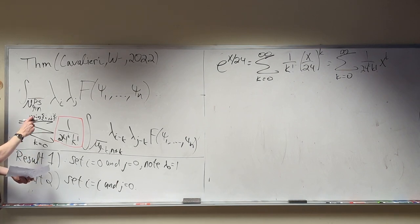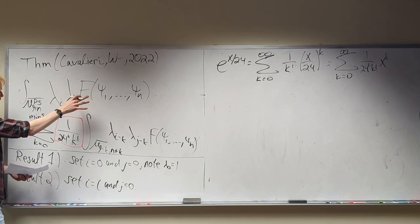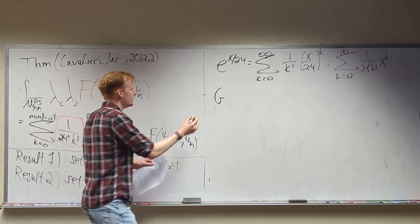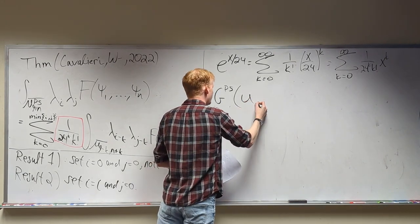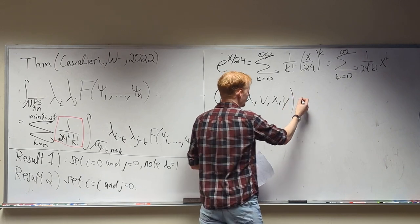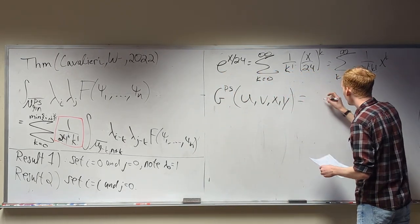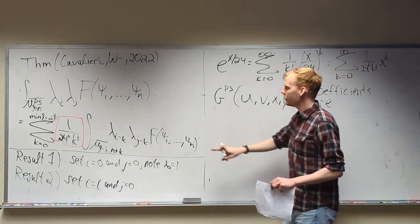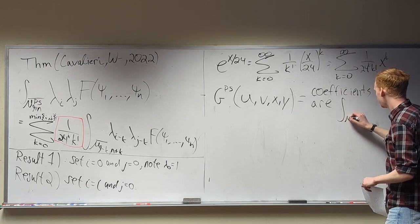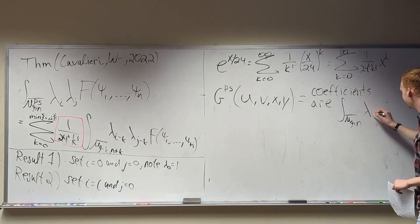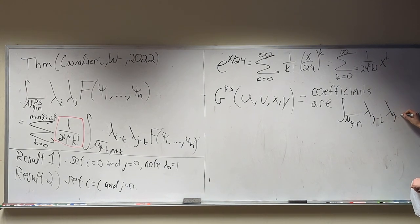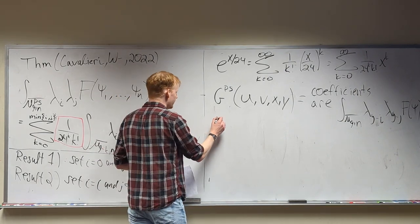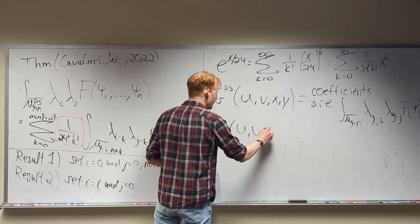I want to package this into a generating function — but there are a lot of variables: g, n, i, j. I'm going to try to do this without actually writing the full generating function. It's going to be a generating function of four variables where the coefficients are exactly these pseudo-stable integrals. The stable versions can be defined in the same way. What this is telling me — with a little bit of work — is a theorem that the generating function for the pseudo-stable Hodge integrals equals e^{x/24} times the generating function for the stable Hodge integrals.